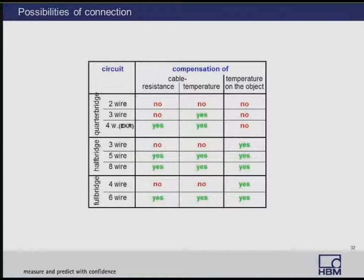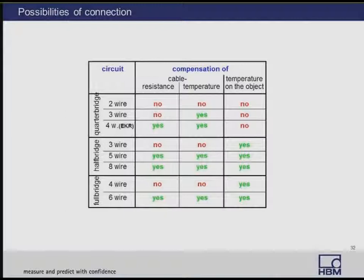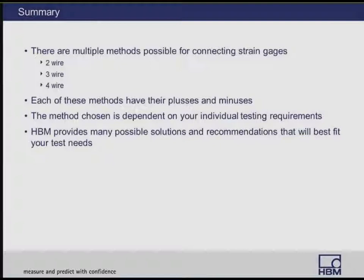For a full bridge, a six-wire configuration may be necessary instead of a half-bridge with five wires, for compensation of mechanical influences or electromagnetic interferences. At www.hbm.com, we offer a wide range of downloadable textbooks, white papers, and videos describing these issues in greater detail. Please feel free to email us and we will send you links to access all of them. In summary, there are multiple methods for connecting strain gauges — two-wire, three-wire, and four-wire in the quarter bridge — each with pluses and minuses. The method chosen depends on your individual testing requirements, and HBM provides solutions and recommendations to best fit your needs.